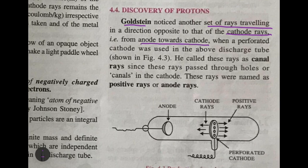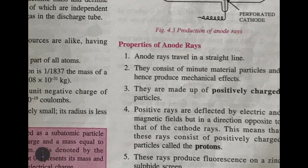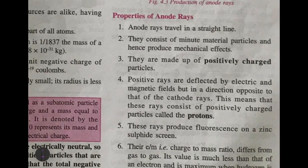When a perforated cathode — perforated means where holes were there — was used in the discharge tube, he called these rays canal rays, since these rays pass through holes or canals in the cathode. So these rays were also called positive rays or anode rays.